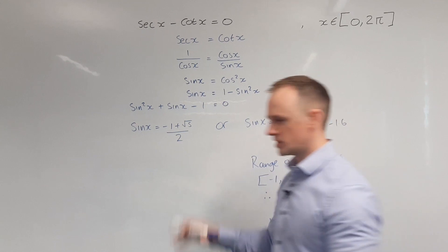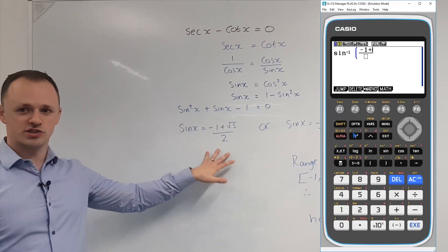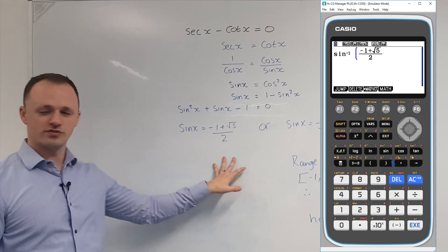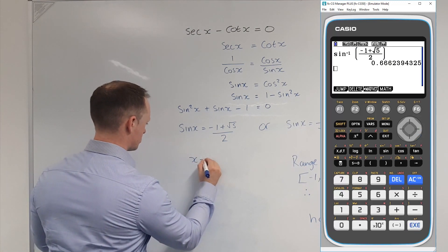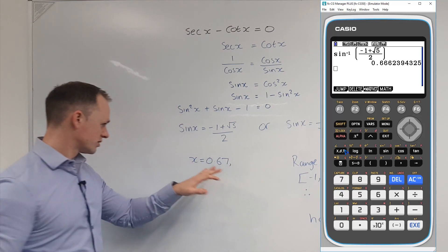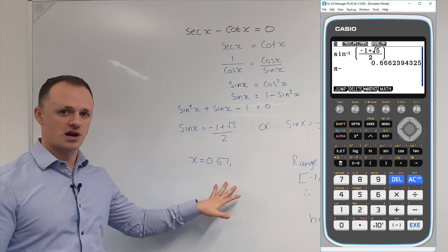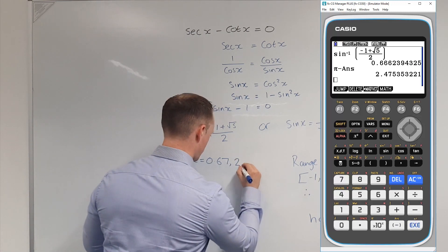Let's go ahead and solve the other part of the equation now. So if we do inverse sine of minus 1 plus root 5 over 2, we get 0.67 to 2 decimal places. And then if we want a second solution, we just have to subtract that from pi. And that would give us 2.48.